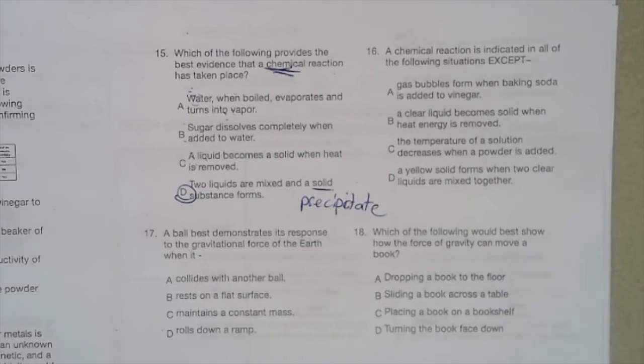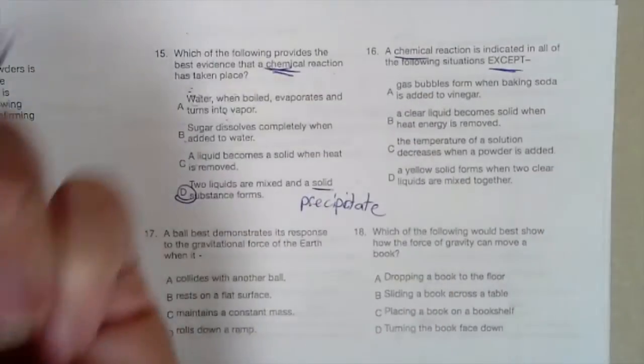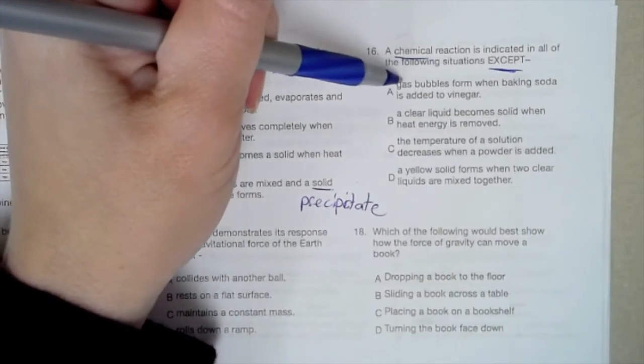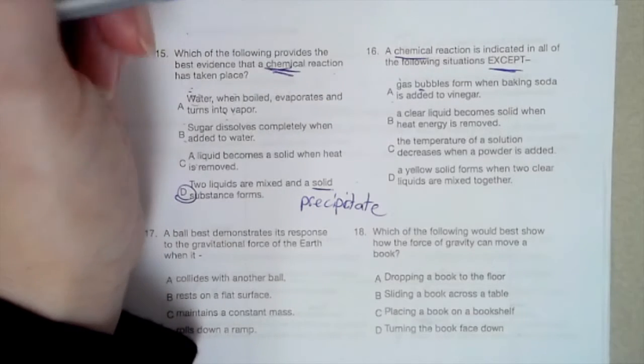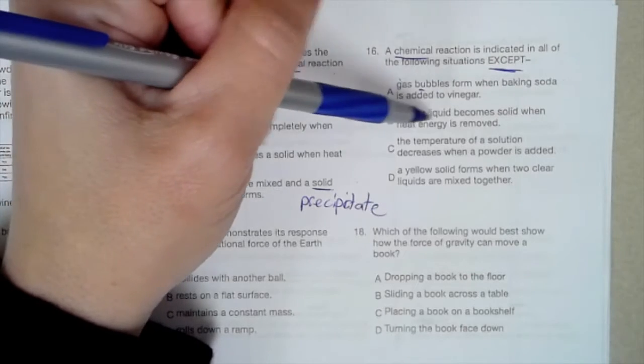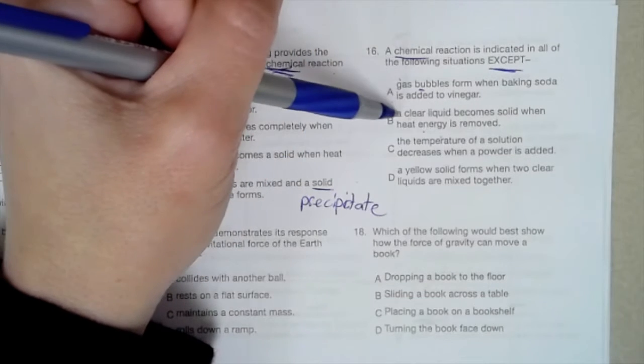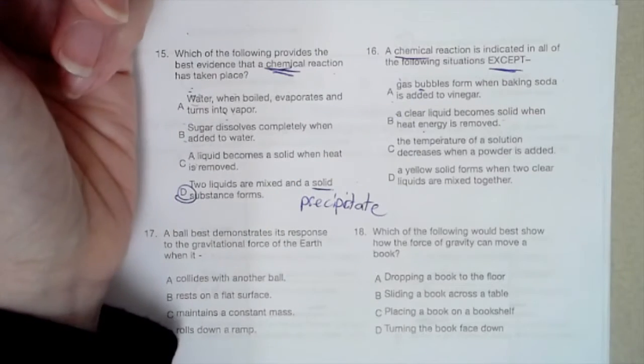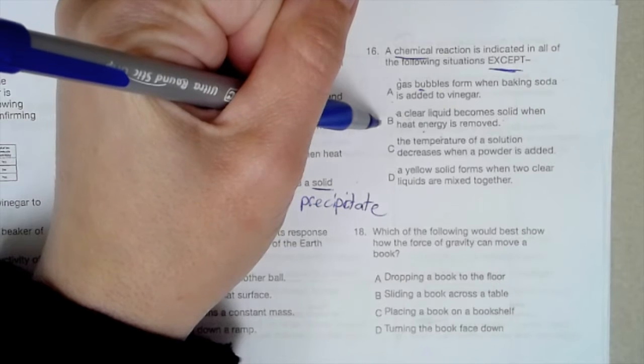A chemical reaction is indicated in all of the following situations except. So we're looking for the one that's not a chemical reaction. Gas bubbles form when baking soda is added to vinegar. Those gas bubbles are a sign of chemical reaction. A clear liquid becomes a solid when heat energy is removed. A clear liquid, that could be water, becomes a solid, that could be ice, when it gets cold. That, to me, sounds like a physical change because we're still having water, it's just solid versus liquid.